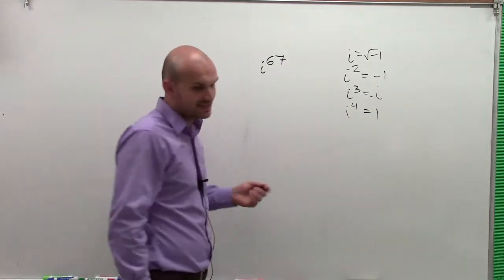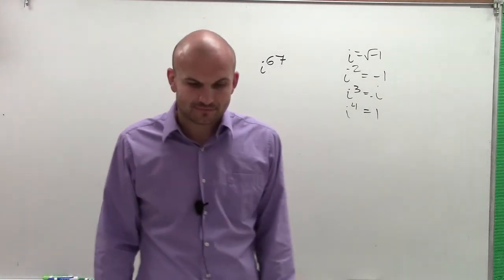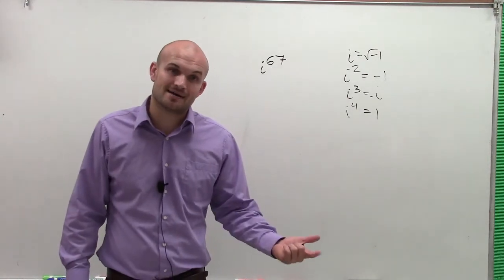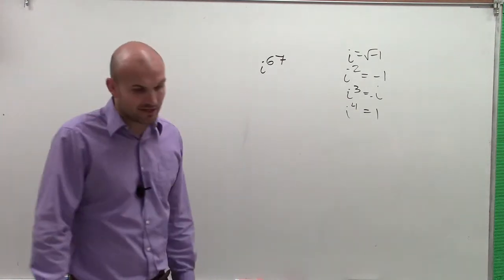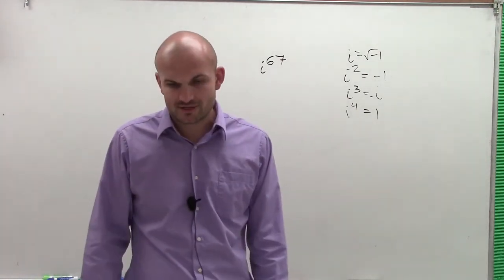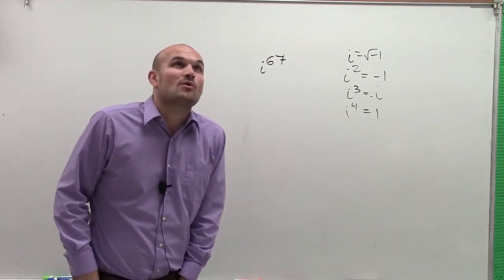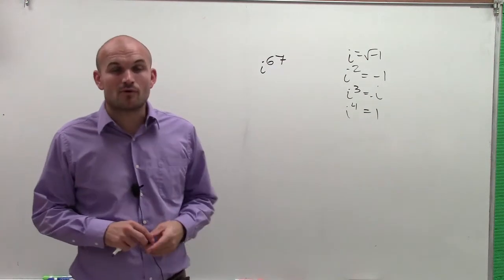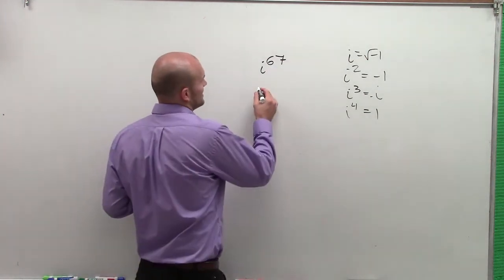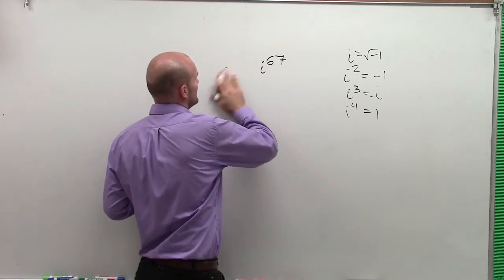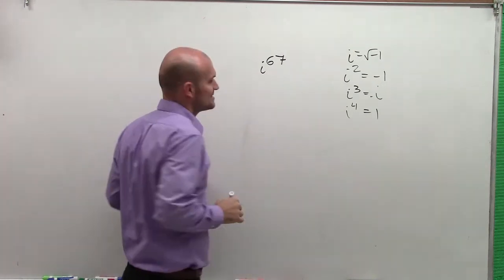So I'm going to do 67 divided by 4. I say, well, 4 goes into 40 ten times, and then there's going to be a remainder of 26. So I could say 4 could go in there 6 more times, which would be 24. So if I did 6 times 24, I'm sorry, times 16, 16 times.